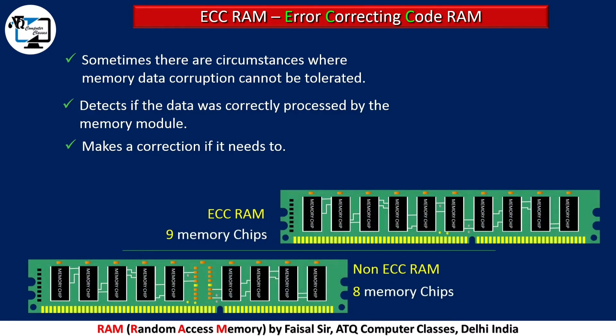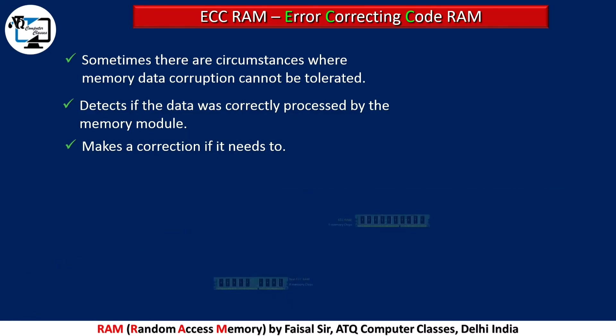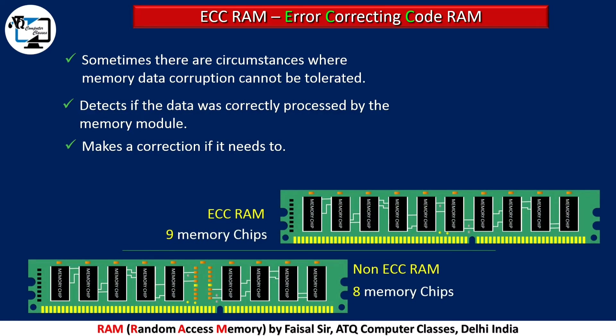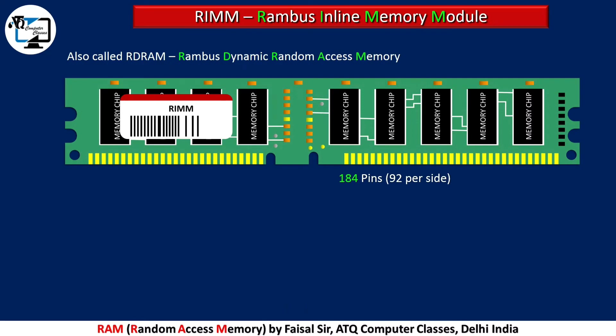The difference between ECC and non-ECC RAM is that ECC RAM has nine chips while non-ECC RAM has eight chips. Another SDRAM module is RIMM. RIMM stands for Rambus Inline Memory Module, also called RDRAM.